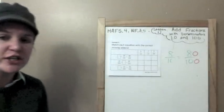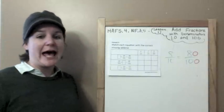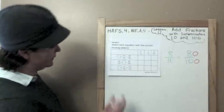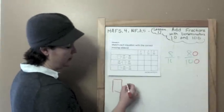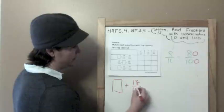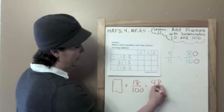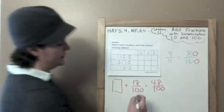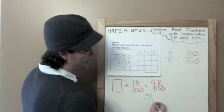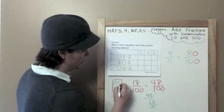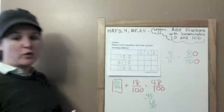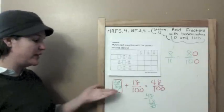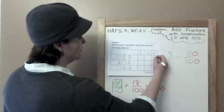Example 3: Match each equation with the correct missing addend. A missing addend is just something that you would add. The first one: what plus eighteen hundredths equals forty-eight hundredths? I know that forty-eight minus eighteen equals thirty, so thirty one-hundredths. But there is no thirty one-hundredths as an answer. However, take off the ending zeros to find the equivalent fraction, which would be three-tenths — and that's your answer for that one.